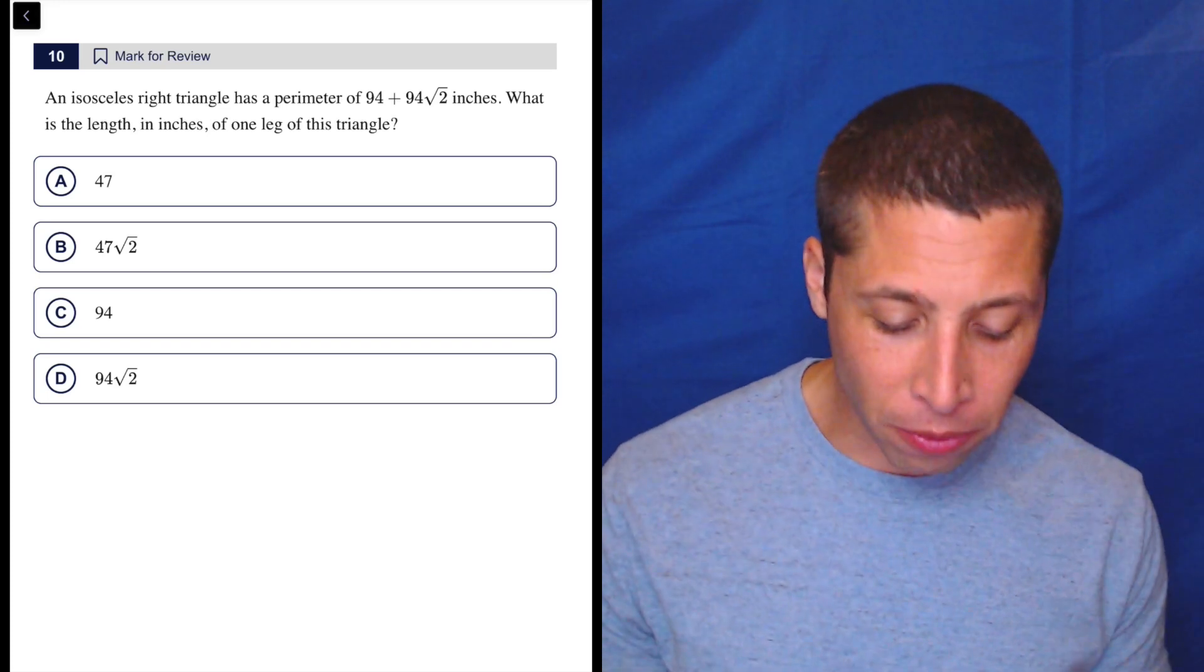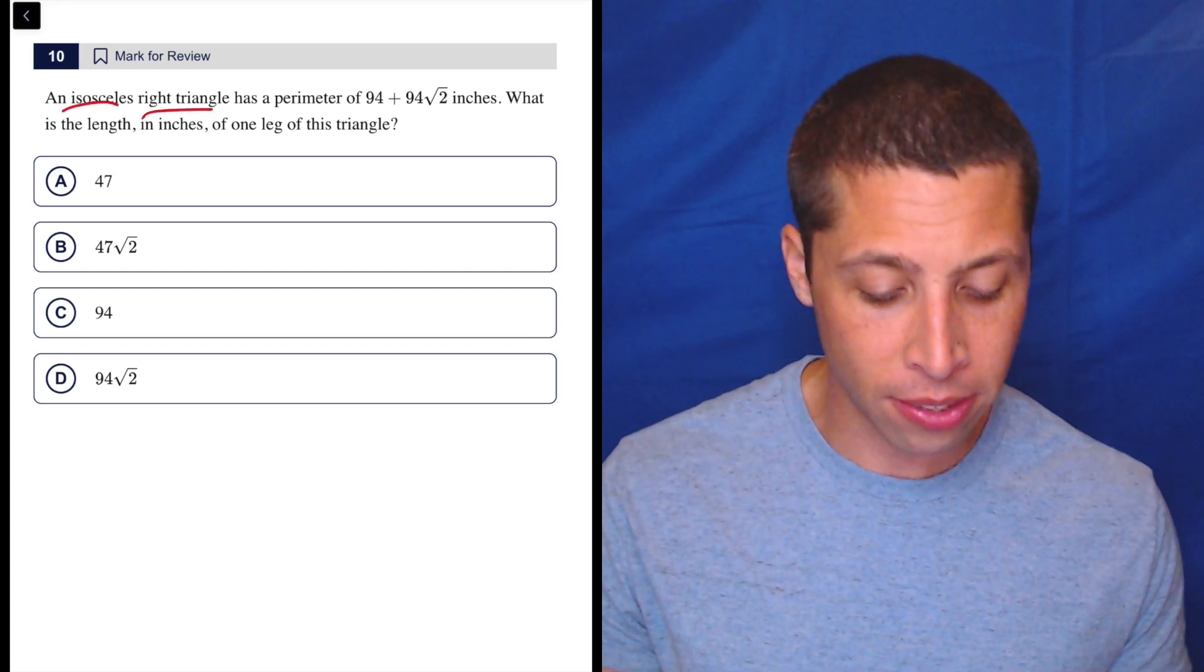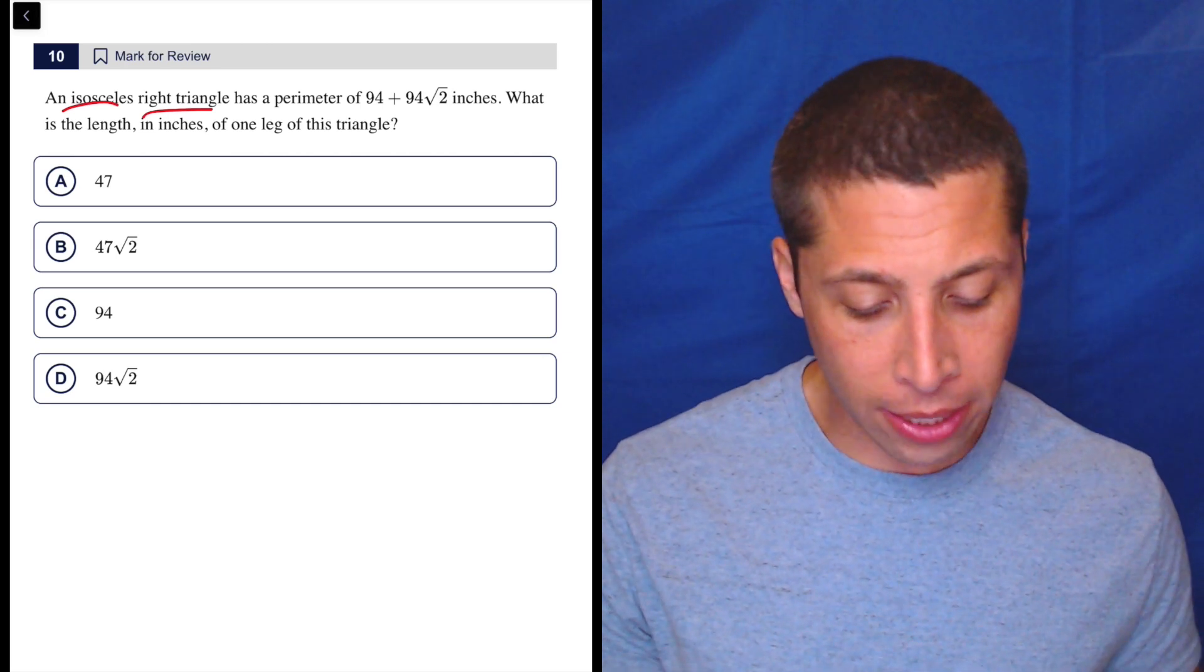This question clearly involves some geometry vocab. We need to know what isosceles means. I hope that you know what a right triangle is. So let's take a look here.